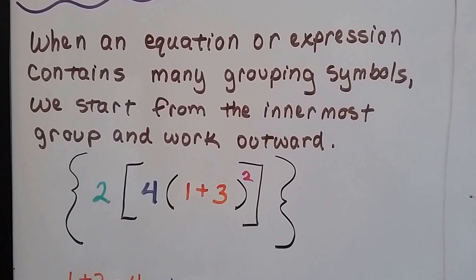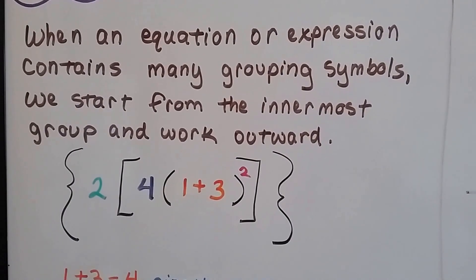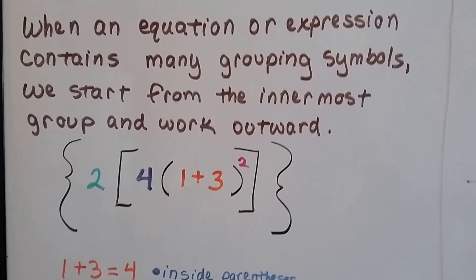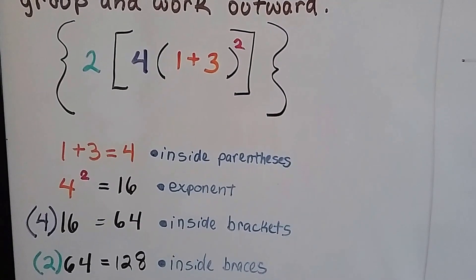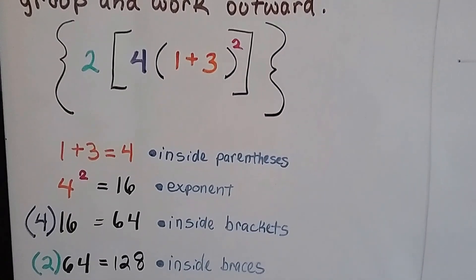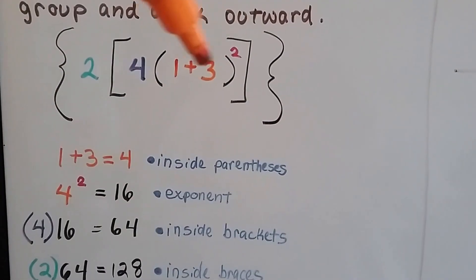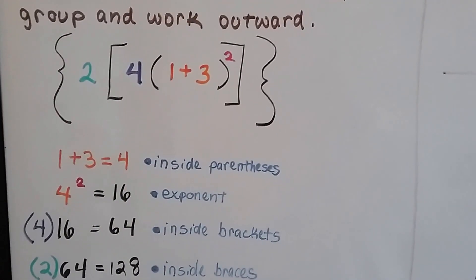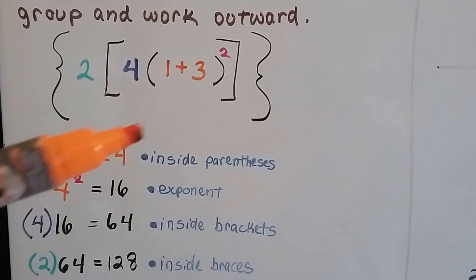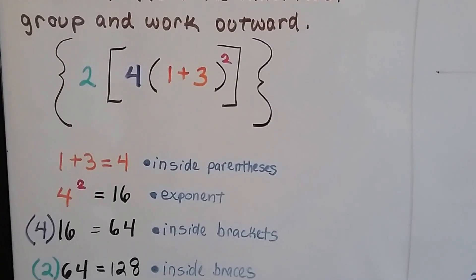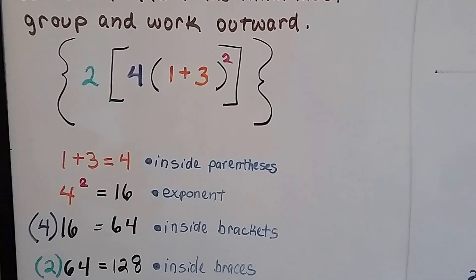When an equation or expression contains many grouping symbols, we start from the innermost group and work outwards. In this one, you can see the orange 1 plus 3 is the innermost part that needs to be solved. So the first thing we're going to do is 1 plus 3 and get 4. We did inside the parentheses, the innermost grouping symbol.